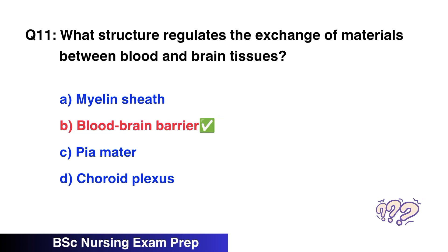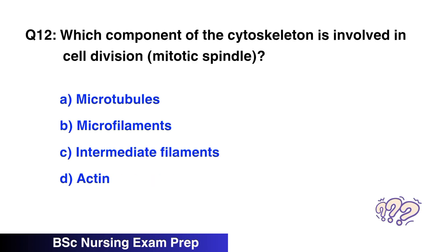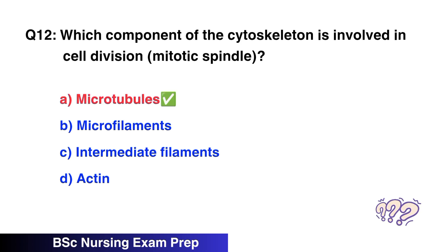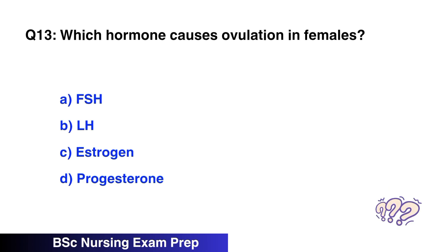Question number 11: What structure regulates the exchange of material between blood and brain tissues? The right option is B, blood-brain barrier. Question number 12: Which component of the cytoskeleton is involved in cell division? The right option is A, microtubules — the mitotic spindle.